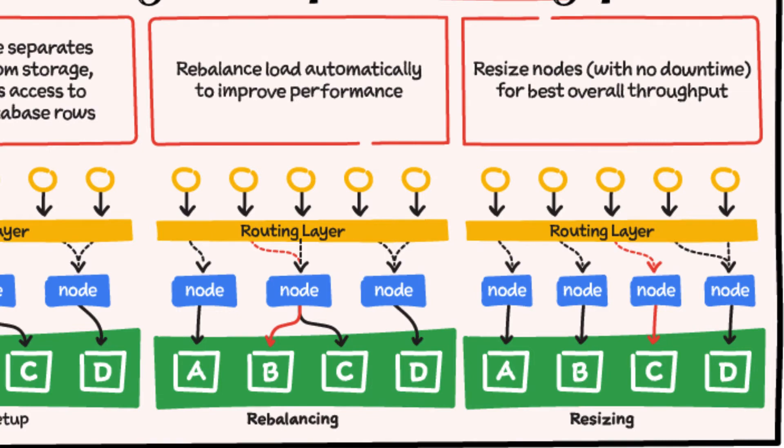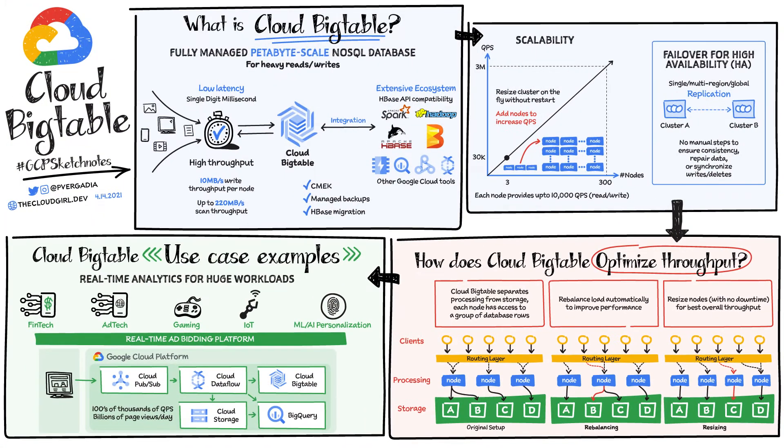Choice of app profile and traffic routing can also affect performance. An app profile with multi-cluster routing automatically routes requests to the closest cluster in an instance from the perspective of the application, and the writes are then replicated to other clusters in the instance. This automatic choice of the shortest distance results in the lowest possible latency.